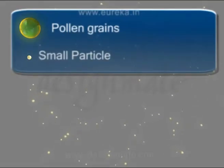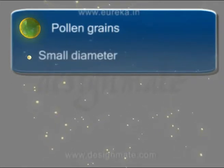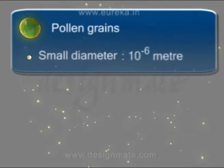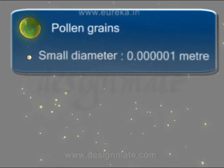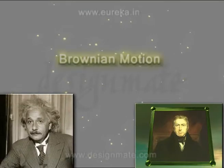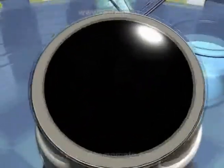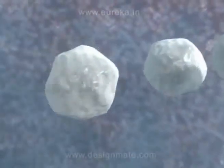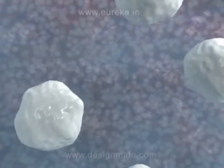Brownian motion is observed even for particles which are smaller than pollen grains and having an extremely small diameter of about 10 raised to minus 6 meters, in other words, about one millionth part of a meter. In spite of having understood the reason behind Brownian motion for more than 100 years, scientists all over the world still face problems while trying to study small biological particles in some solution, as these particles do not remain stationary in the medium but undergo Brownian motion.